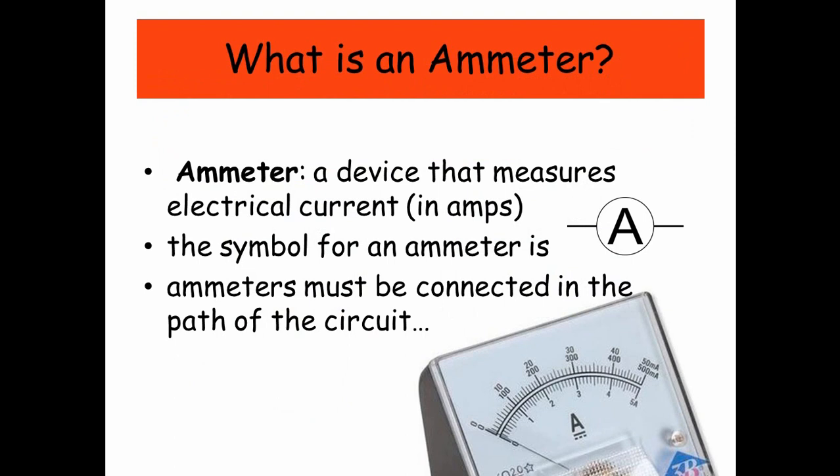So firstly, let's start off with what is an ammeter. An ammeter is a device that measures electrical current in amps. The symbol for an ammeter is a circle with an A. Ammeters must be connected in the path of the circuit.